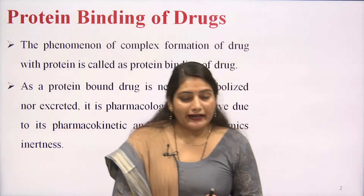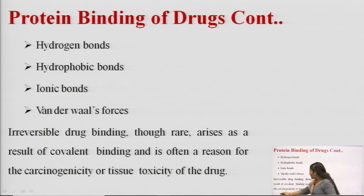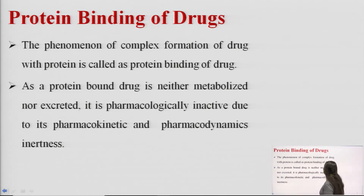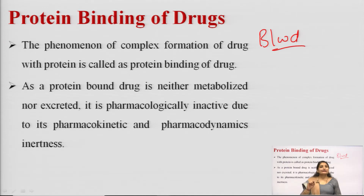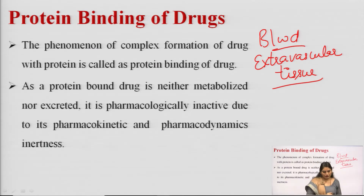The third factor affecting the distribution of drug is tissue binding of drug to various tissue components. A drug administered in the body can bind with several tissue components, and these components fall into two major categories: first is the blood, and second is the extravascular tissues.